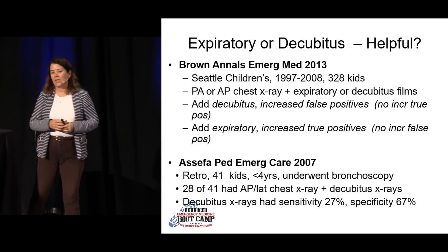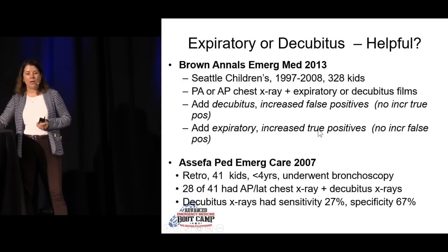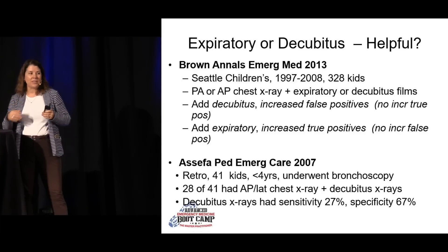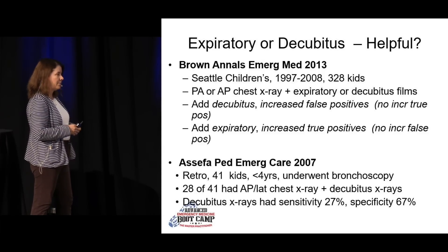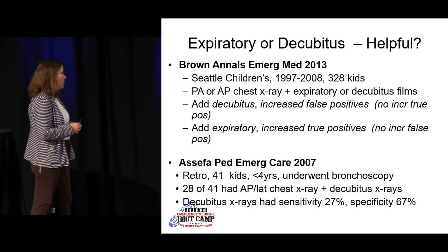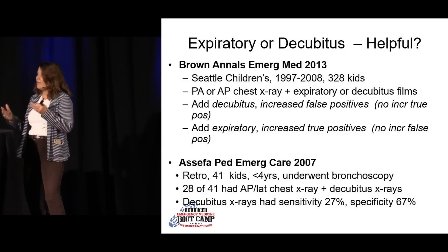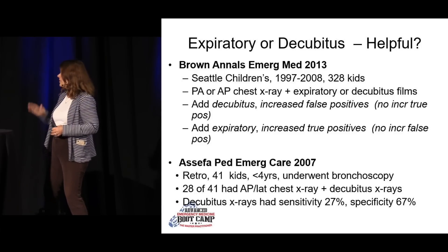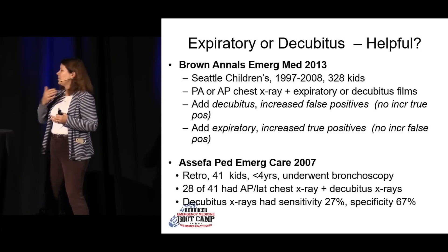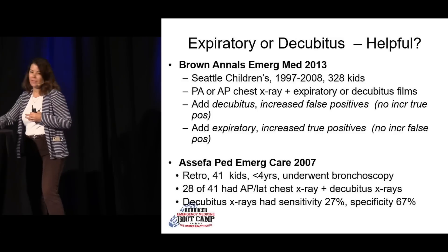They looked into decubitus versus expiratory films out of Seattle Children's — about 11 years, 300 kids. They all got either a PA or AP chest x-ray plus expiratory or decubitus films. When they added the decubitus it seemed to increase the false positive rate — they chased a lot of stuff that wasn't there. But adding an expiratory film seemed to increase the true positive rate — there was actually something there. So they switched their protocols to always do expiratory films. Another study of 41 kids who all underwent bronchoscopy found the decubitus sensitivity was really, really low — again an argument for expiratory films. Not all your techs may know how to do this, so sometimes you need to get the supervisor involved.